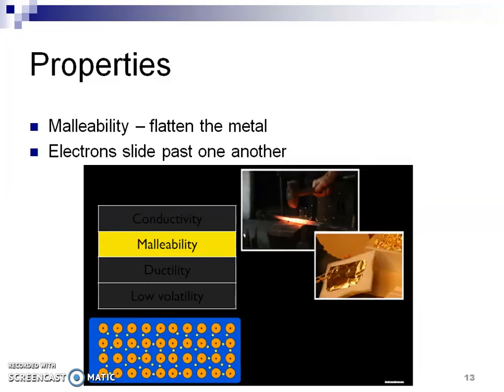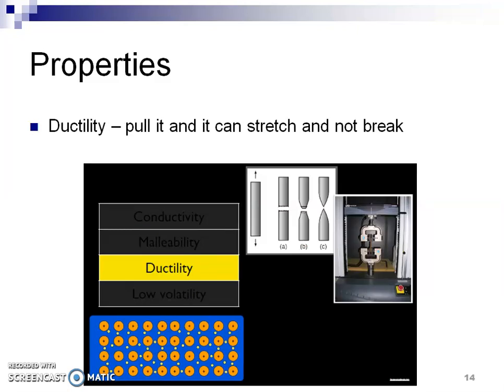Metals are also ductile. You can take a gigantic piece of copper and make it into a really, really skinny wire. Why? Because all you're doing is shifting those electrons around.